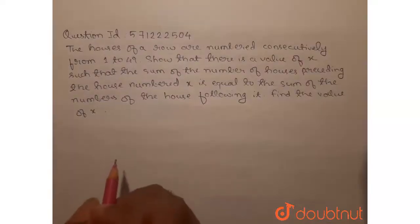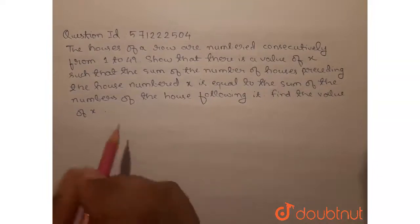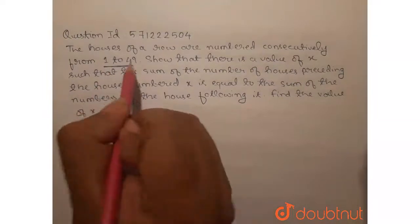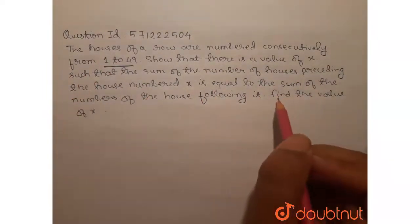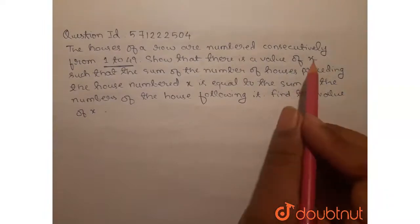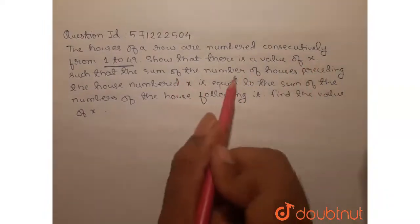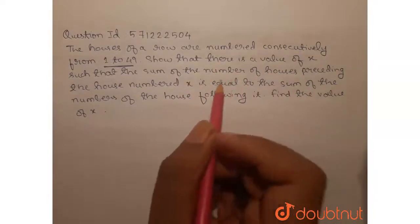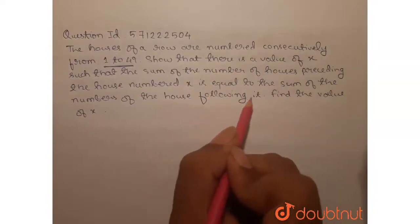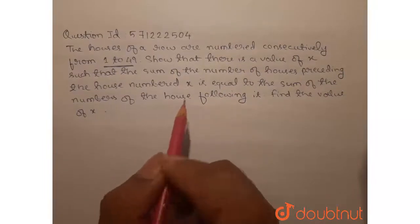We have been given that the houses of a row are numbered consecutively from 1 to 49. There are houses in a row numbered 1, 2, 3 till 49. We need to show that there is a value of x such that the sum of numbers of houses preceding the house numbered x is equal to the sum of the numbers of the house following it, and we need to find this x.